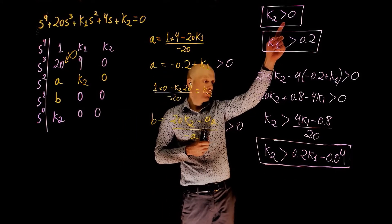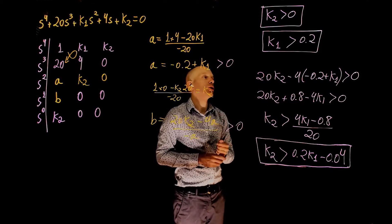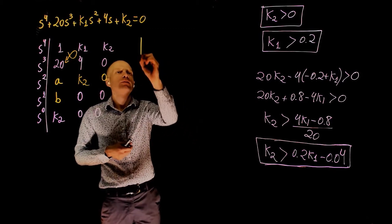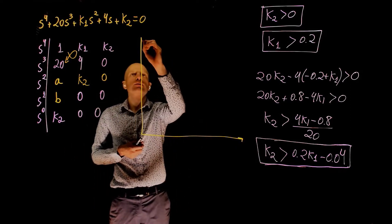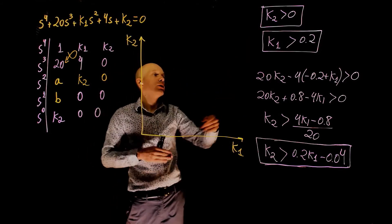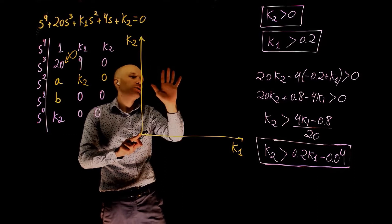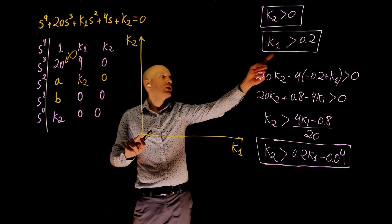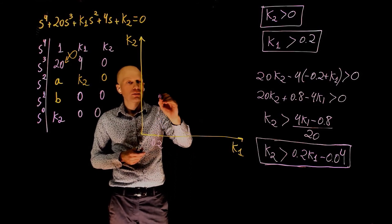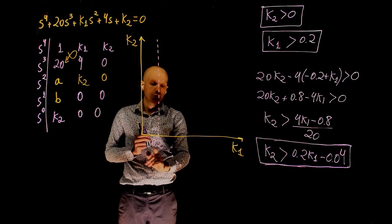This is the third condition that guarantees stability. So, we now have three conditions. k2 needs to be greater than 0, but also greater than something that is a function of k1, and k1 needs to be greater than 0.2. Now, let's try to represent these three conditions on a 2D plane, where the axes are k1 and k2. The first condition is that k2 needs to be greater than 0, so all values of k2 need to be positive. k1 needs to be greater than 0.2, so we can only use this part of k1. Anything below 0.2 makes the system unstable.